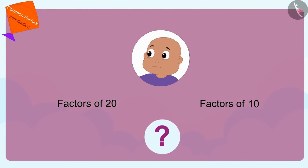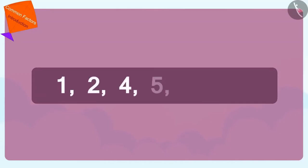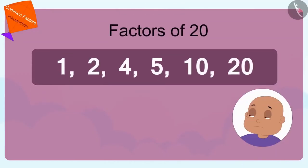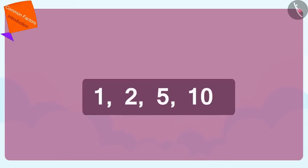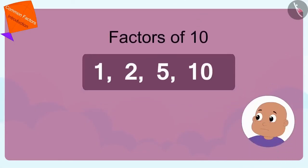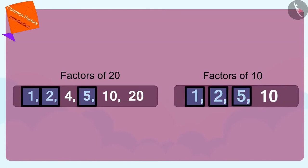To solve this question, Bablu has to choose the factors which are the factors of both twenty and ten. Can you tell which are the factors of both twenty and ten? If you want, you can pause the video and find the answer. He first wrote the factors of twenty. Now, Bablu wrote down the factors of ten. Yes! These numbers — one, two, five and ten — are factors of both twenty and ten.